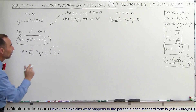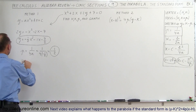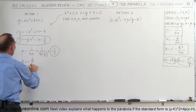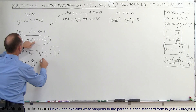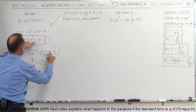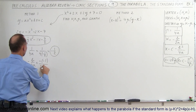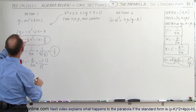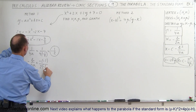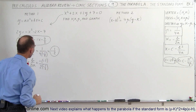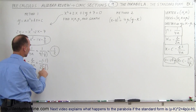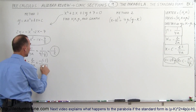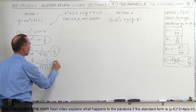Next we find h. h can be found by the formula h equals negative b over 2a. So it's negative b, which is negative 1, divided by 2a, which is 2 times negative one-half, giving minus 1. Negative divided by negative is positive, and 1 divided by minus 1 equals minus 1. So h equals negative 1.